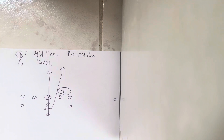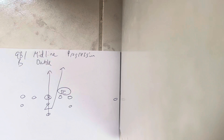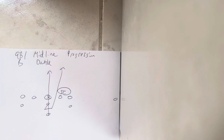Quarterback, B-back, midline double progression. Here we go. The quarterback is going to take the snap, jump into the backside A-gap, and point the ball. The B-back is going to sprint through the ball, then sprint through the playside hip of the guard and score.